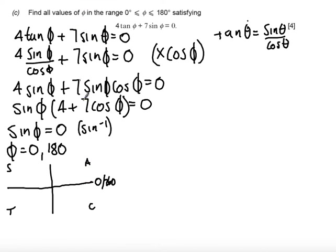Now solve the second bracket. So I get 4 + 7cosφ = 0.